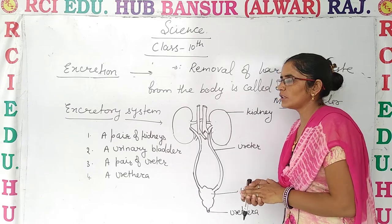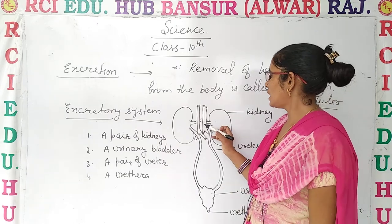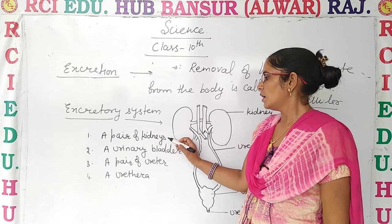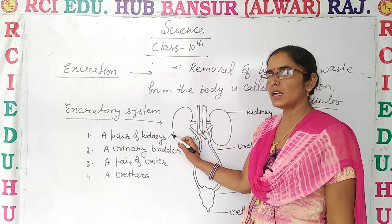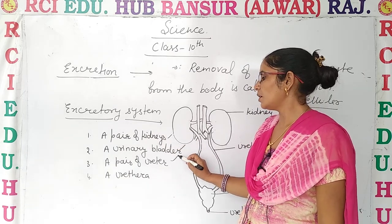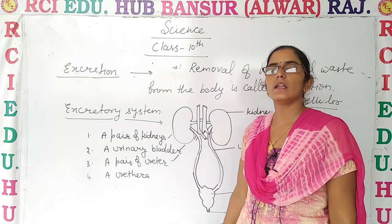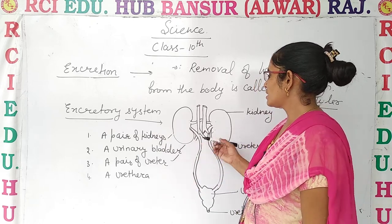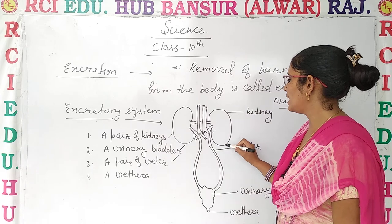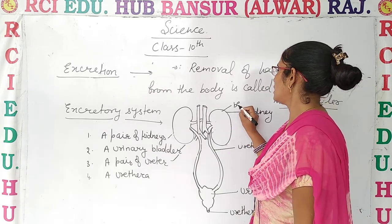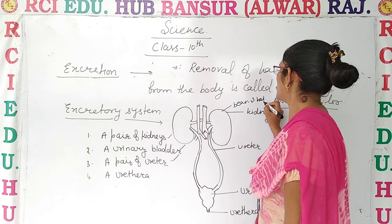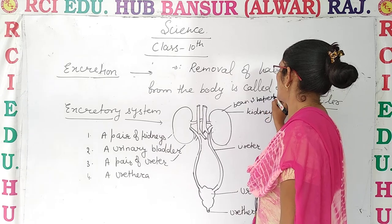Let's discuss the excretory system. The excretory system consists mainly of four parts: a pair of kidneys, one urinary bladder, a pair of ureters, and a urethra. The kidneys are bean-shaped. You will have seen them — this is a kidney.